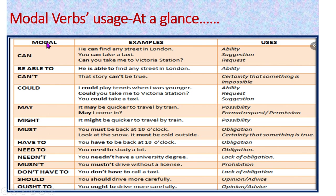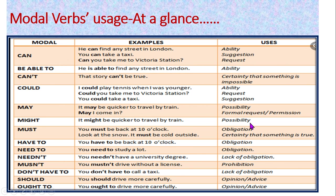Under the modal column, all modal verbs are listed with sentence examples and their usages. Our focus is: is it an ability, a suggestion, a request, or certainty? 'He can find any street in London' refers to ability. 'Can you take me to Victoria Station, please?' is a request. 'You can take a taxi' is a suggestion. 'That story can't be true' expresses certainty. 'I could play tennis when I was younger' expresses past ability. 'Could you take me to Victoria Station?' is a request, more formal. 'You could take a taxi' is a suggestion.